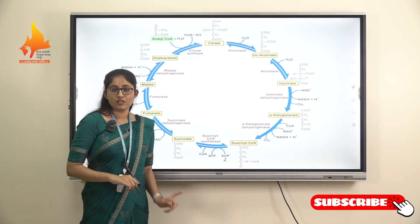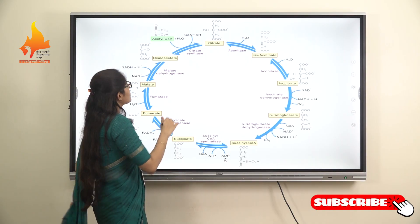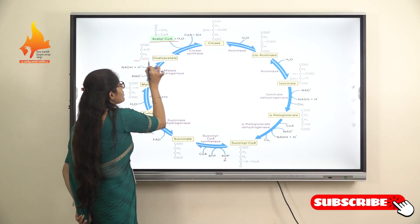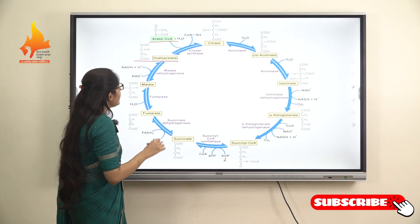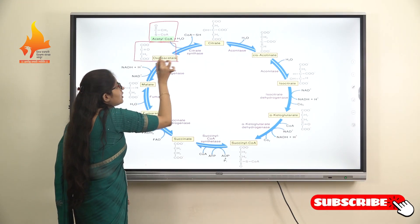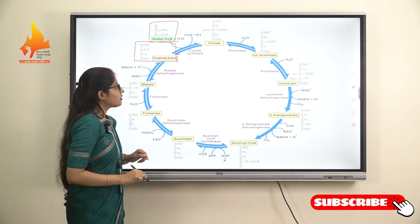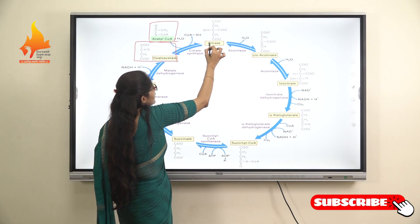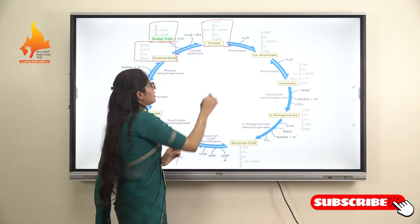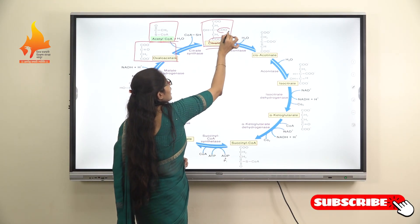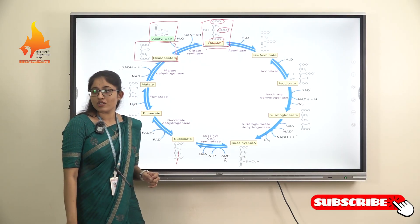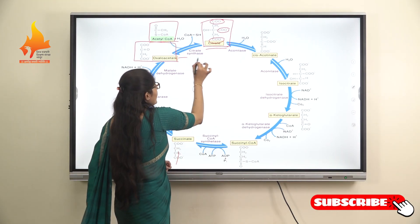Here we will start the Krebs cycle. The acetyl-CoA, which is generated from the pyruvate molecule, combines with oxaloacetate. Acetyl-CoA is a two-carbon molecule and oxaloacetate is a four-carbon molecule. These two components combine and get converted to citrate, which is a six-carbon molecule. Citrate is also known as the tricarboxylic acid due to the presence of three carboxyl groups. This reaction is carried out by the enzyme citrate synthase.